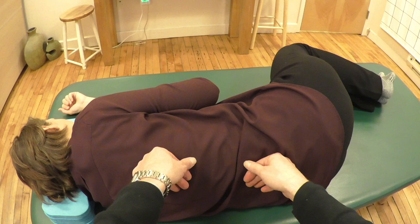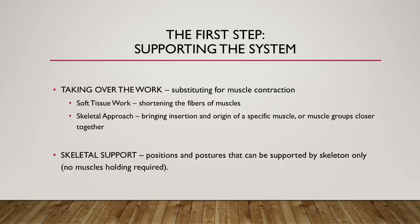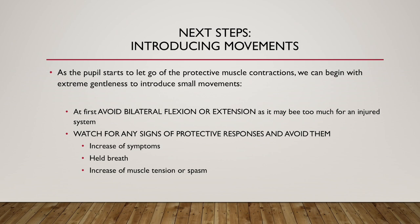We can also use a skeletal approach by knowing where a particular muscle is originating and inserting — which bones. By moving the two bones toward each other, we produce a slack and therefore diminish the contraction. This is an example of substituting for muscle contraction. We can also talk about physical skeletal support — here we examine how the person is aligned, how the skeleton is doing the job of canceling gravity, or whether the person unknowingly and subconsciously still contracts certain muscles to maintain position. That first step of supporting may take a substantial part of the lesson, if not the entire first lesson.